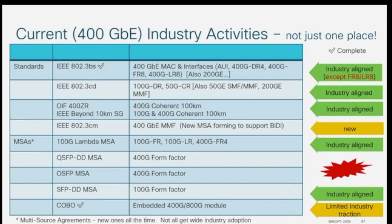And then we get into the form factors, and that's where things get very exciting and interesting. If you follow 400 GigE at all, there's a big contention between the QSFP Double Density MSA, which is one form factor, and the Octal SFP — OSFP MSA — which is another 400 gig form factor. For all intents and purposes, they're little metal boxes that take 400 gig electrical in and 400 gig optical out. From that level, they both work.